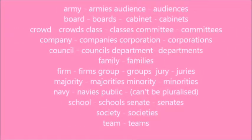You can have more than one of them — you can pluralise collective nouns if you've got more than one. Two armies, two families — a family, but if there's two, then it's families. A group, if there's two, then it's groups. However, 'public' cannot be pluralised.